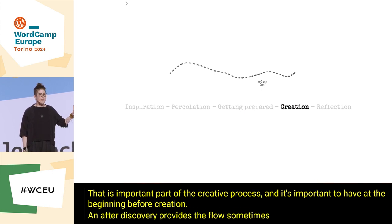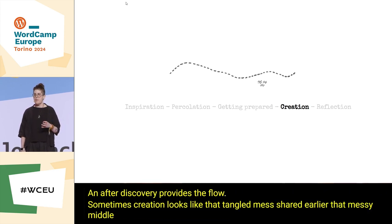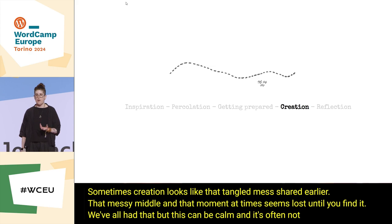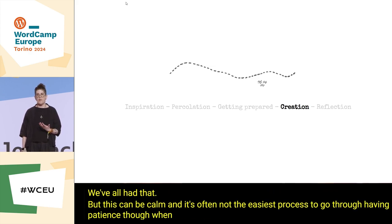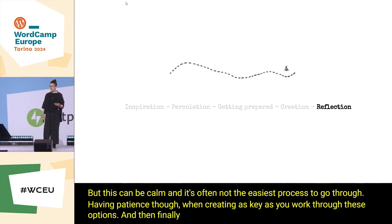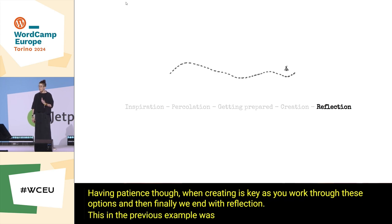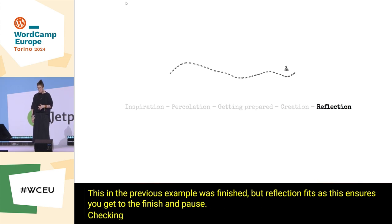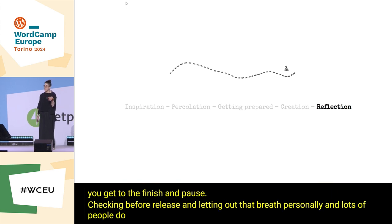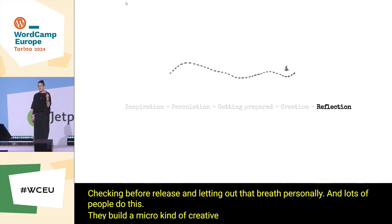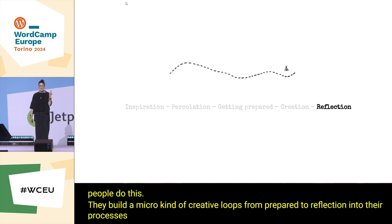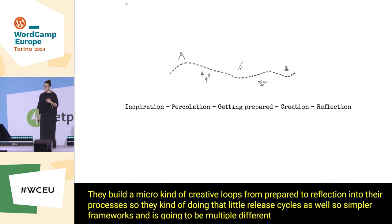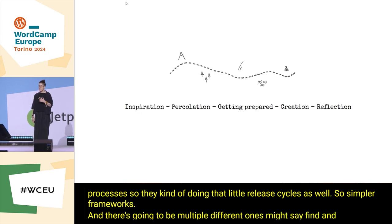Being prepared is the breath at the start before you take a leap. Taking note of that is an important part of the creative process. Sometimes creation looks like that tangled messy middle, and that aha moment at times seems lost until you find it. But this can be calm, and having patience when creating is key as you work through these options. And then finally we end with reflection. Reflection ensures you get to the finish and pause, checking before release and letting out that breath.